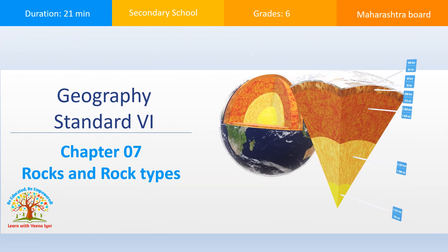Hi, good morning students. Welcome back to your geography lecture. Here's your teacher Veena. Today we are going to learn chapter 7: Rocks and Rock Types. Children, have you ever seen rocks anywhere around? We do see them when we walk on the road - small rock particles, small stones, pebbles. All these are parts of rocks itself. Even in the mountains and wherever construction is going on, we can see rocks. So today we are going to learn something more about rocks - the types of rocks.